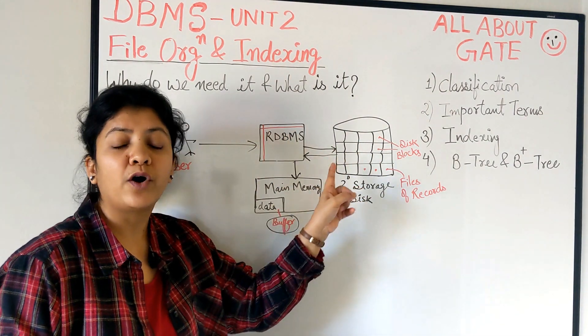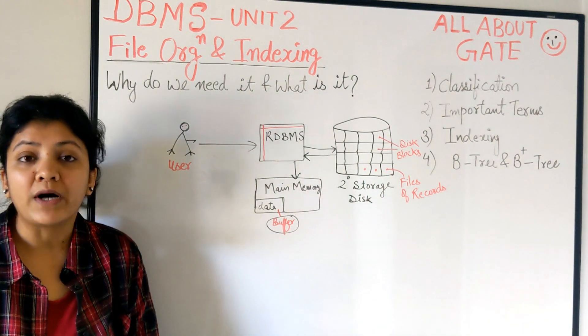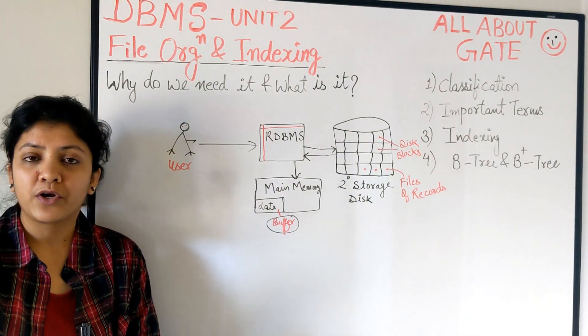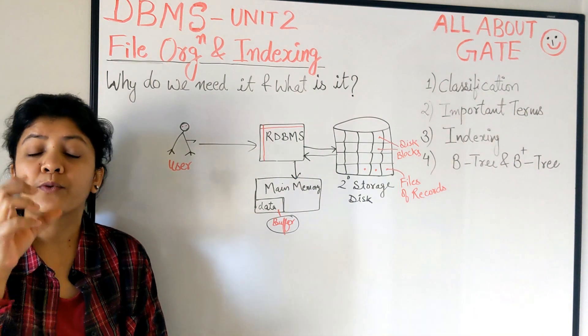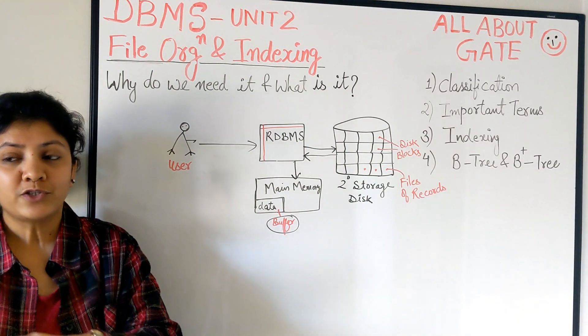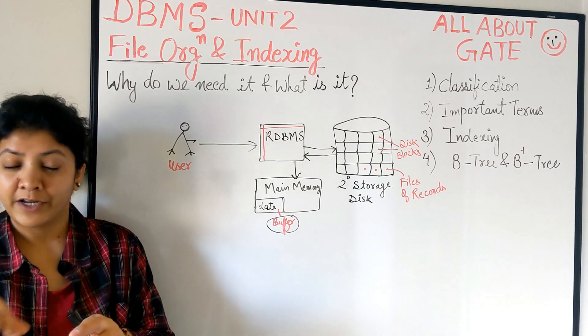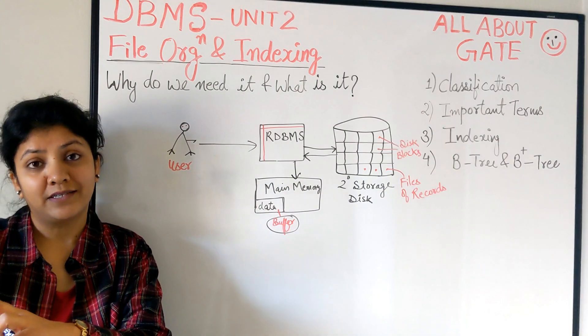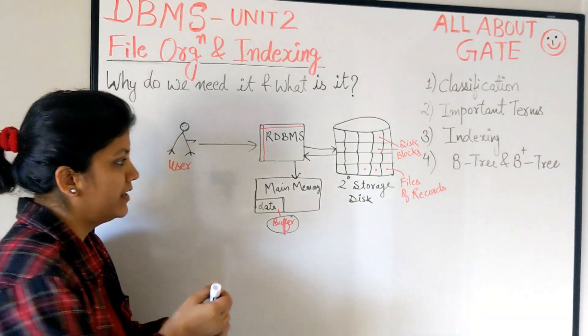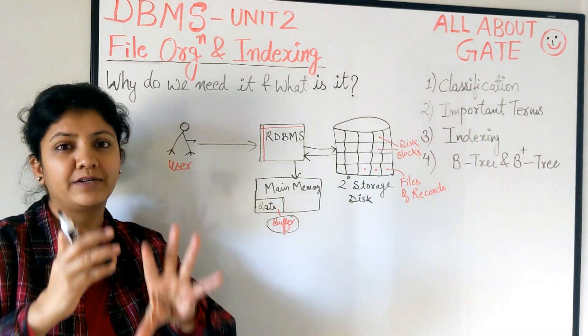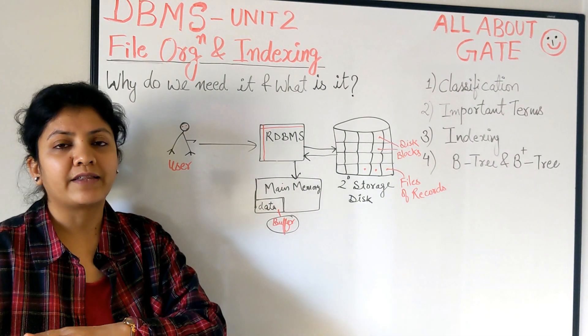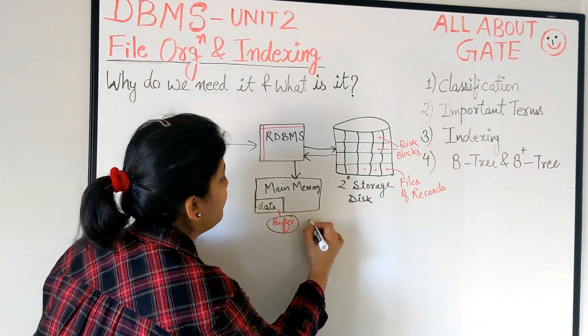It's dependent upon how the data is actually organized there. The data is actually the file of records, and these records are getting stored on your disk. The question comes: in order to access any record, I have to access the disk block. So my access time for the record is actually equivalent to the access time of the disk block, and that's a very costly operation.